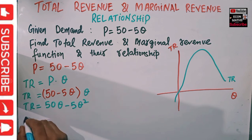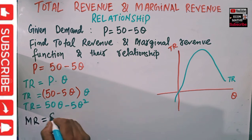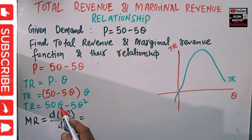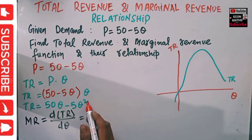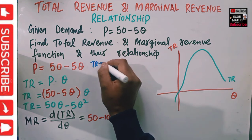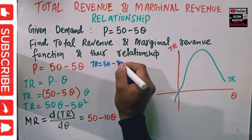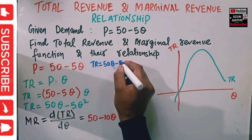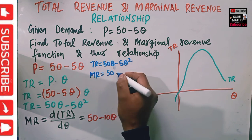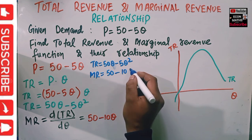Now, what is the marginal revenue function? Marginal revenue is simply the derivative of the total revenue function with respect to output. Taking the derivative of TR = 50Q - 5Q² with respect to Q: the derivative of Q is 1, leaving 50; the derivative of Q² is 2Q, so 2 × 5 = 10Q. We get MR = 50 - 10Q.